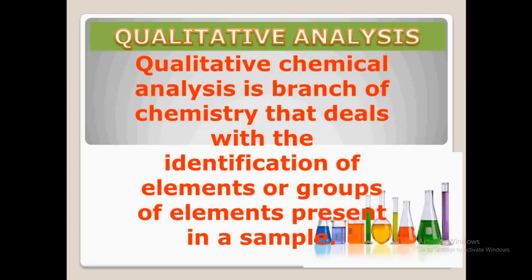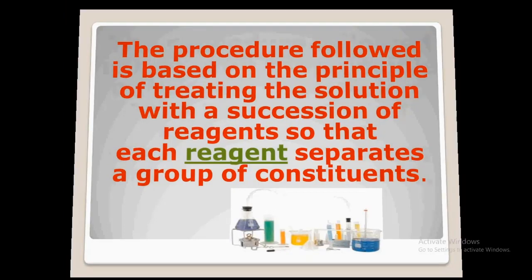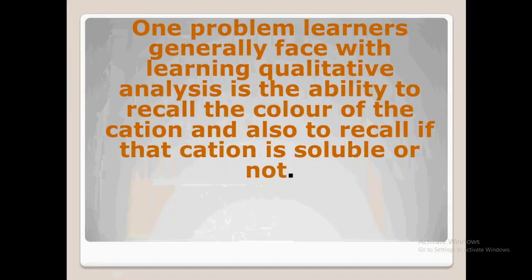Qualitative analysis is a branch of chemistry that deals with the identification of elements or groups of elements present in a sample. The procedure usually followed is based on the principle of treating the solution with a succession of reagents so that each reagent separates a group of constituents. One problem learners generally face with qualitative analysis is the ability to recall the color of the cation and also to recall if that cation is soluble or not.